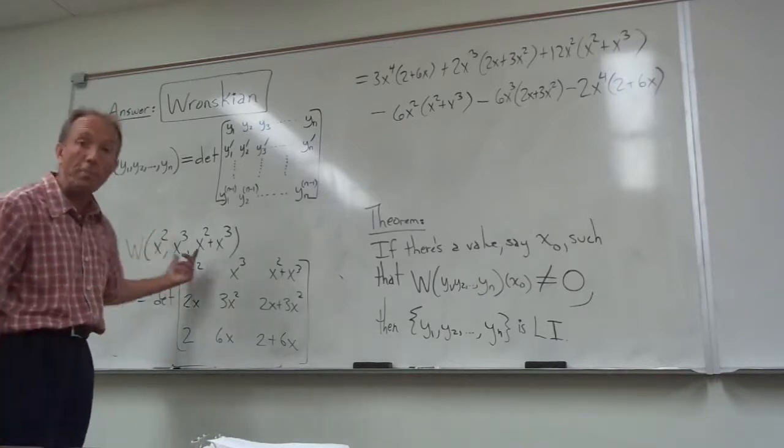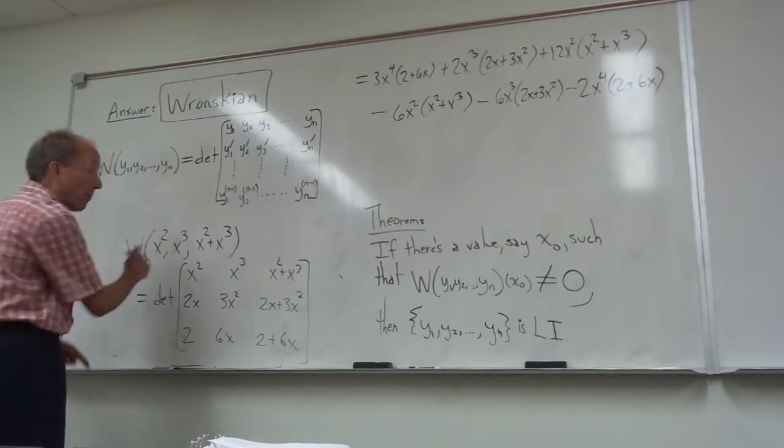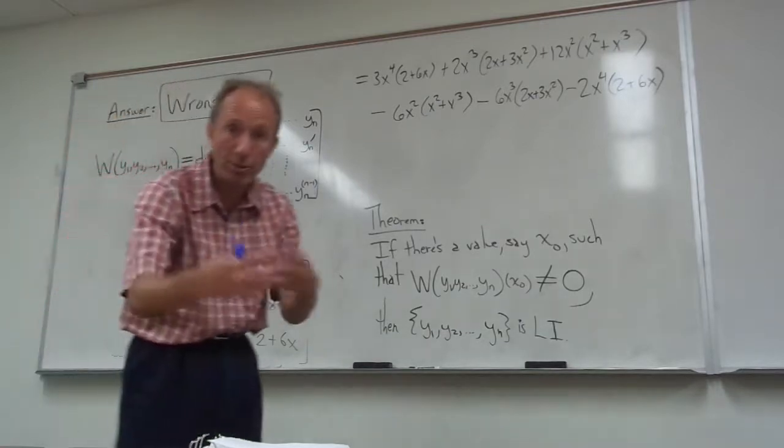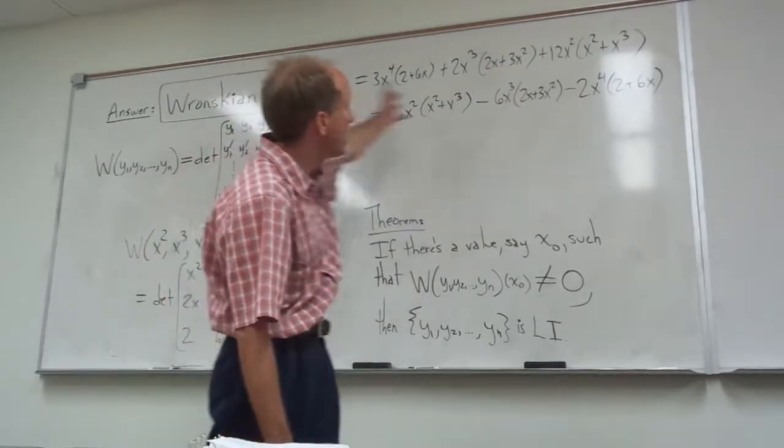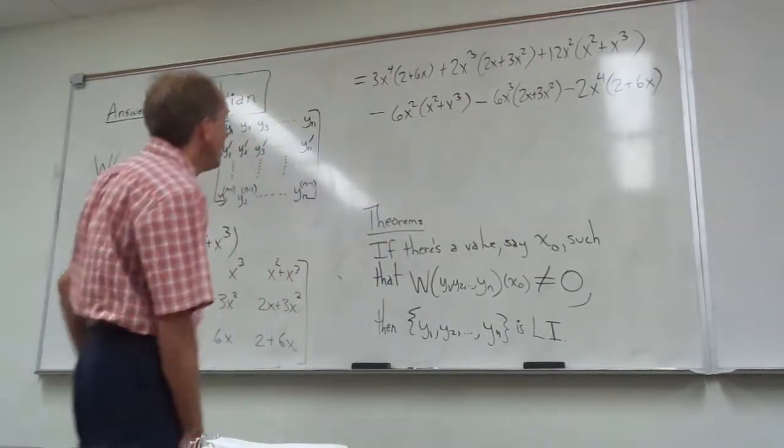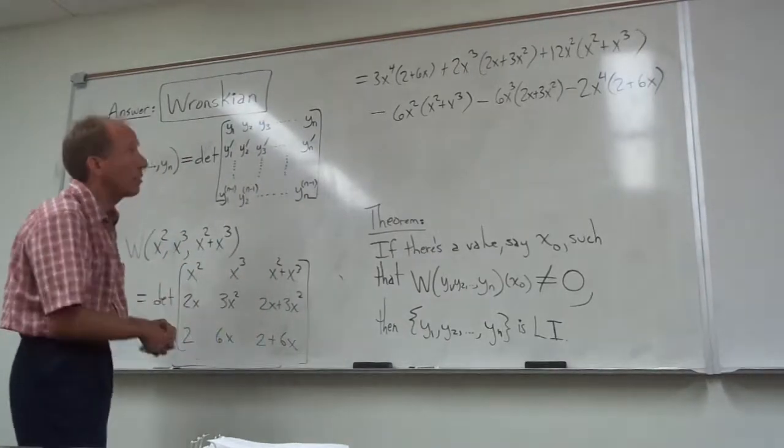And these functions should be LD because the third one is just the sum of the first two. So there is a linear dependency there. And I'm just doing my arrow method up here. You guys can pause this if you need to and check. This is just the arrow method on this three by three Wronskian.